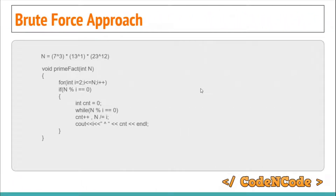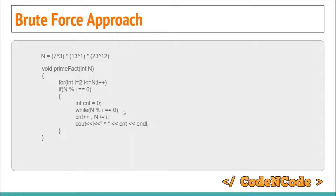The brute force approach is straightforward: we run a loop from 2 to n, and if i divides n we initialize the count to 0. While i divides n, we increment the counter and divide n by i. Finally, when the while loop completes, we print i raised to power count.